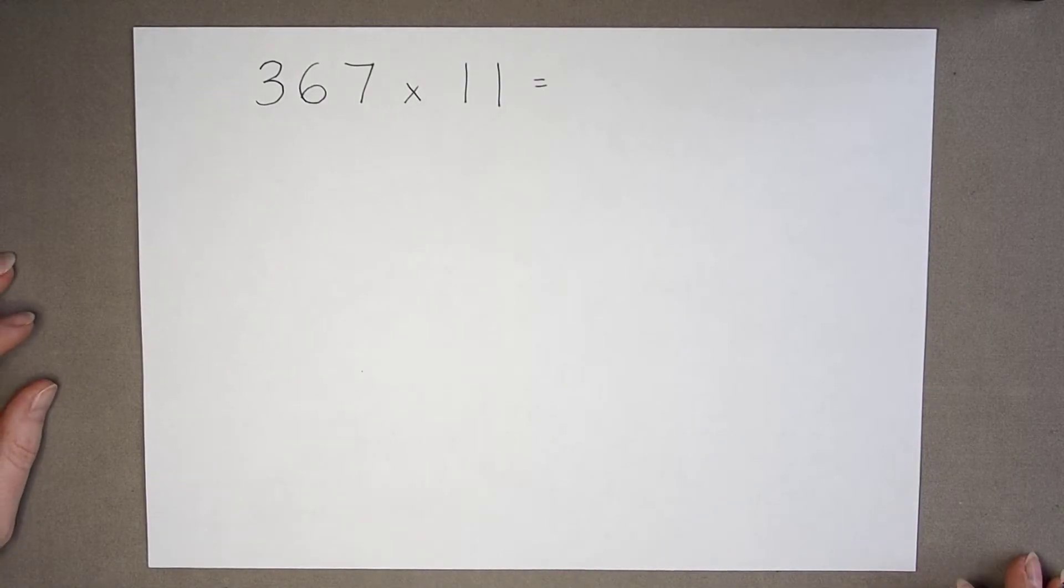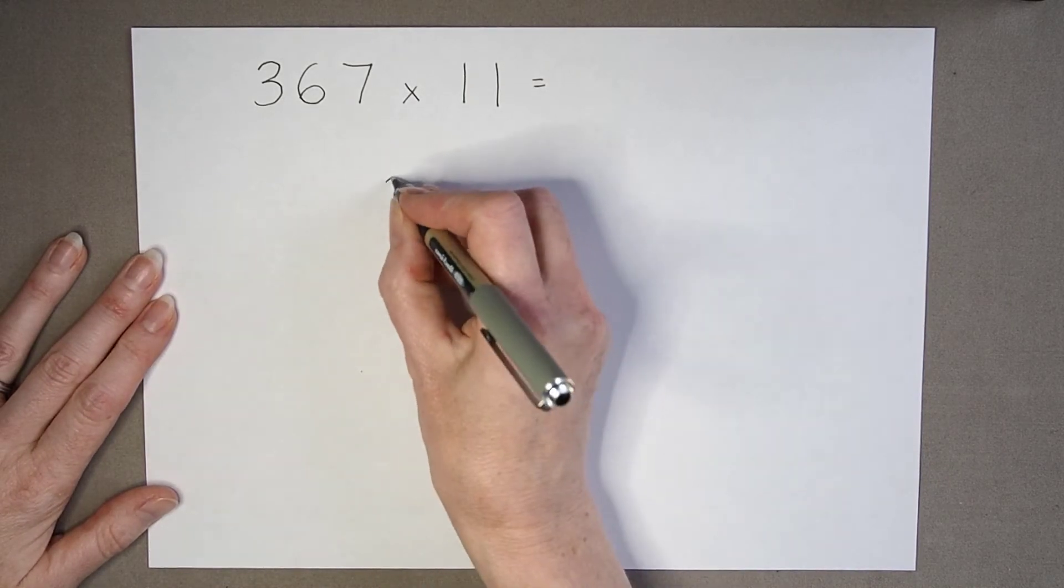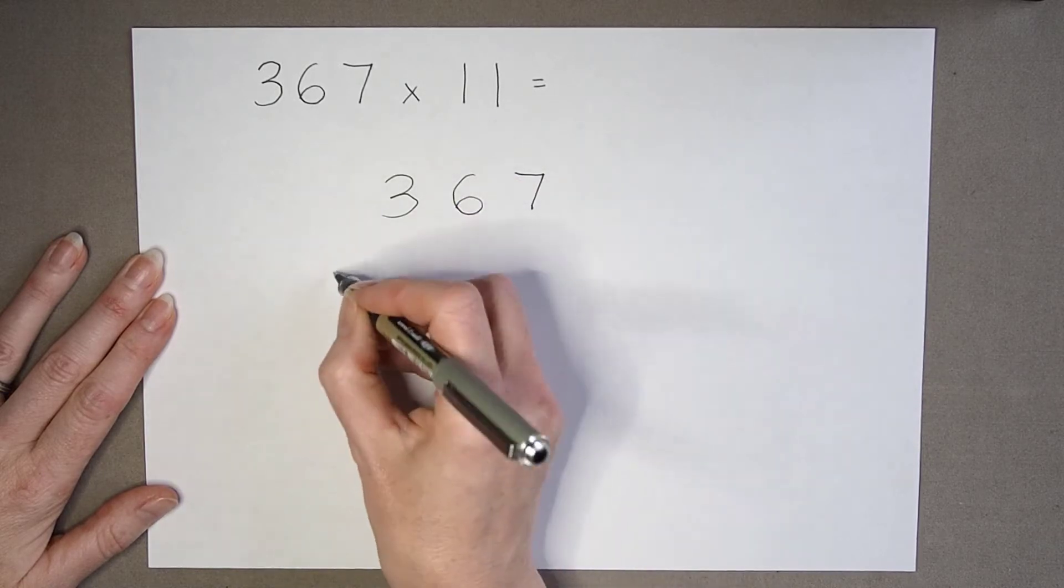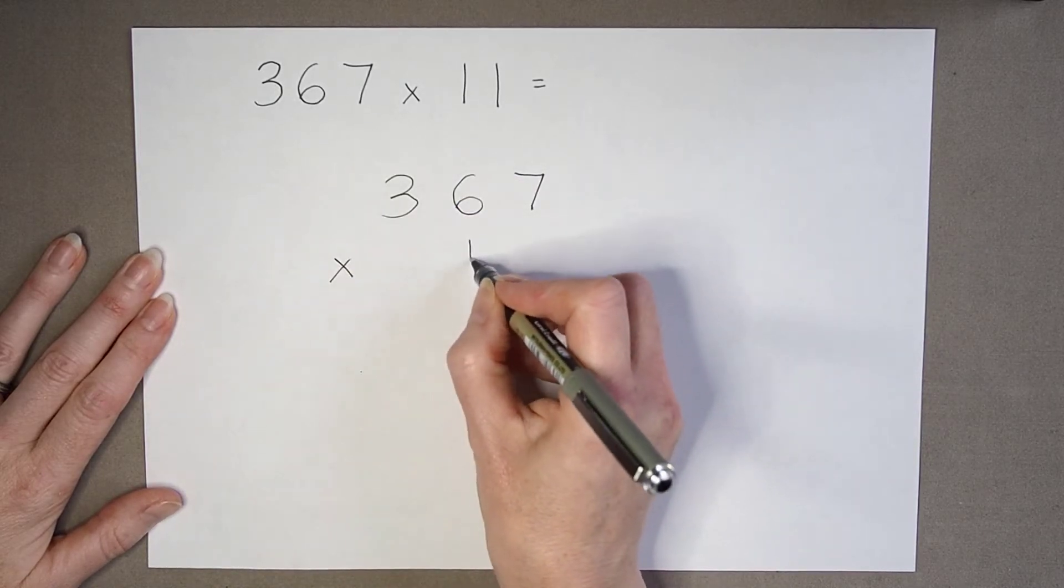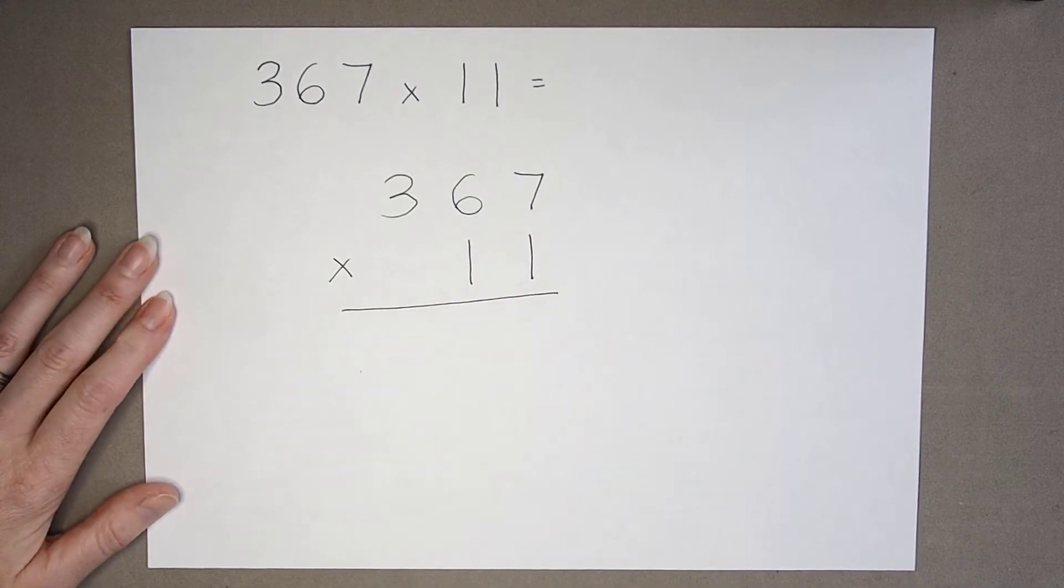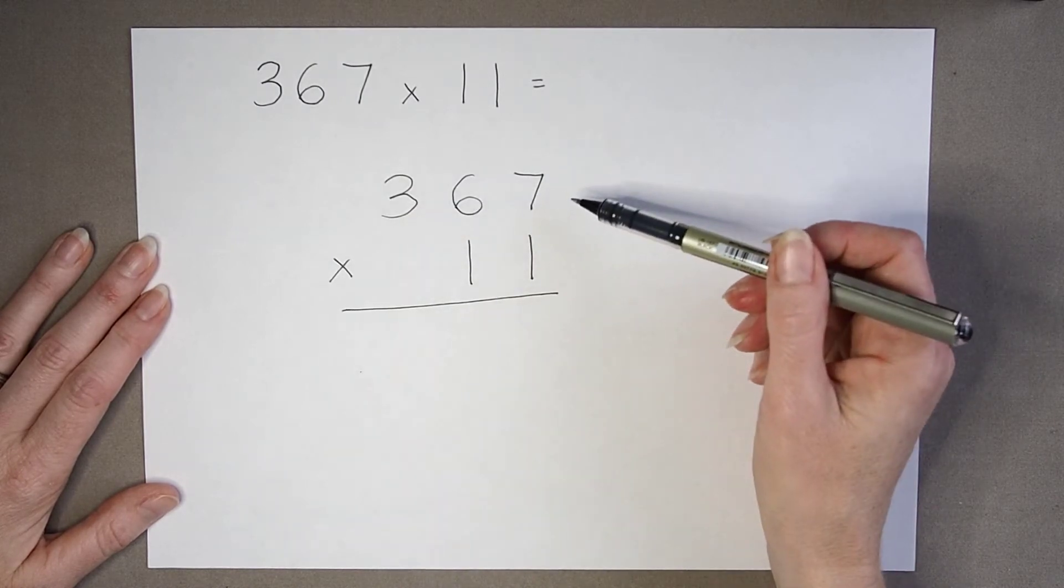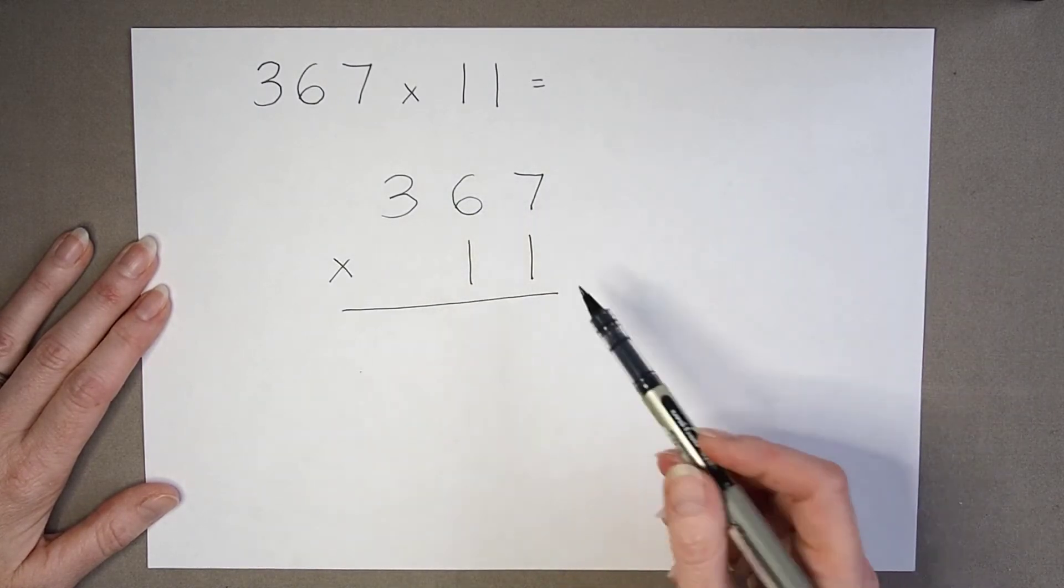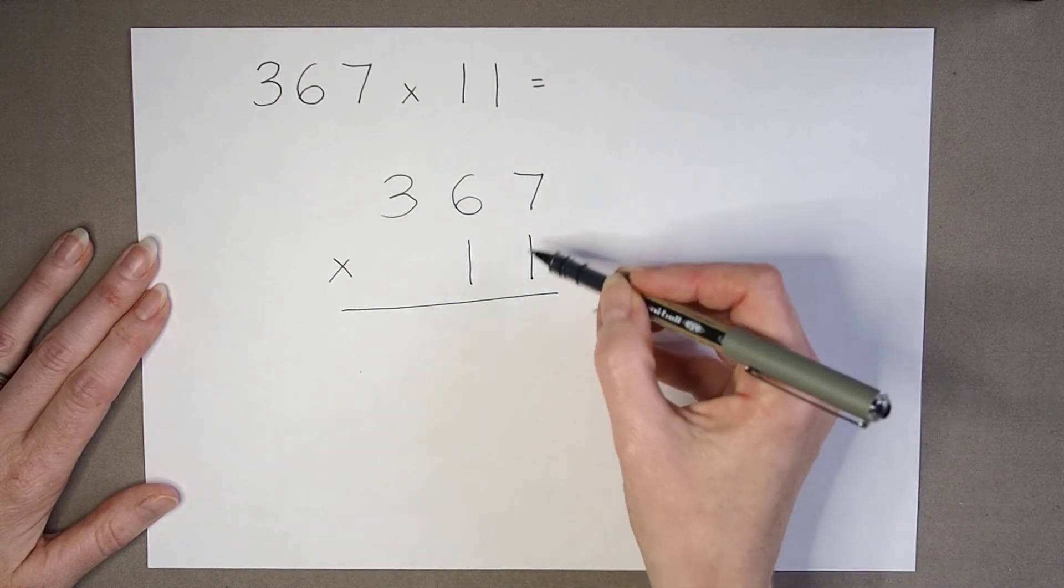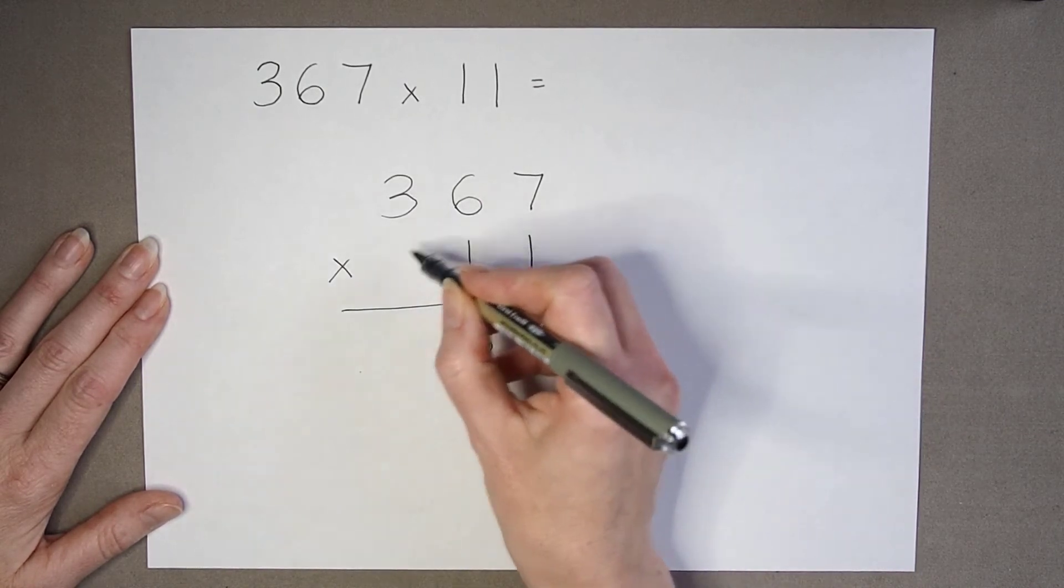Another digit that it's easy to multiply by is 1. So if we have a number like 367 multiplied by 11, what we need to remember is that whenever we multiply by 1, we end up with the number we started with. So 367 multiplied by 1 is going to be 367, and we can see that as I write it in: 1 times 7 is 7, 1 times 6 is 6, 1 times 3 is 3.